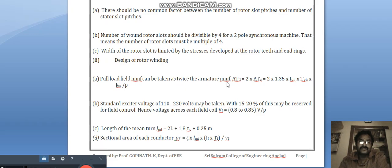Design of rotor winding: full load field MMF can be taken as twice the armature MMF. T_atfl = 2 × AT_a, that is 2 × 1.35 × m × V_phase × T_phase × kw / p. Standard exciter voltage of 110 to 220 volt may be taken, with 15 to 20% of this may be reserved for field control.